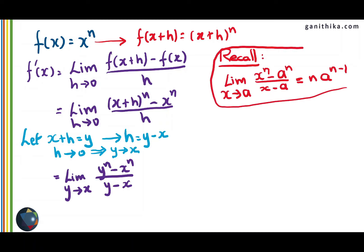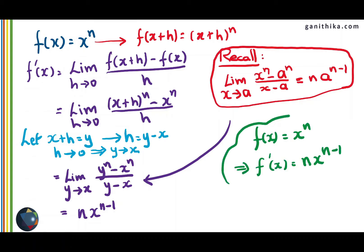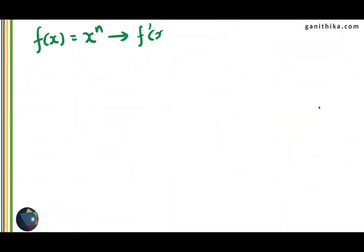You should recall from the limits chapter: limit as x tending to a of x^n minus a^n over x minus a equals n times a^(n-1). This has been proved on ganitika.com under the limits chapter. Applying this limit, with a replaced by x, gives us n times x^(n-1) as the derivative of x^n. So if f of x is x to the power of n, its derivative is n x to the power of n minus 1.